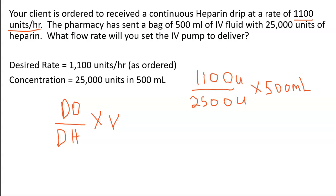So the dose order is 1,100 units. The dose on hand is 25,000 units. And the volume is 500 ml. Units cancel units — 1,100 divided by 25,000 gives you 0.044. Then 0.044 times 500 ml gives you 22 ml.